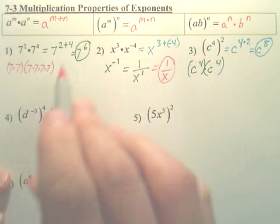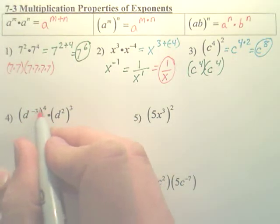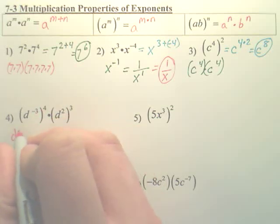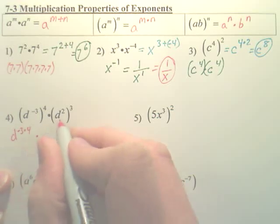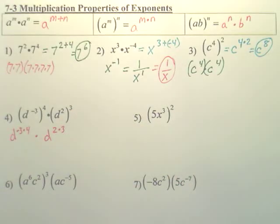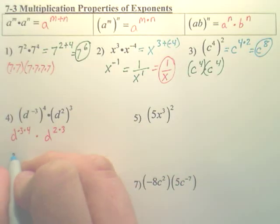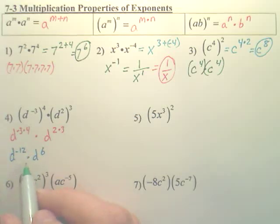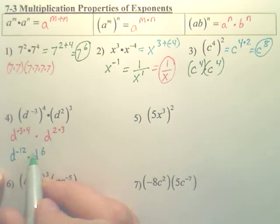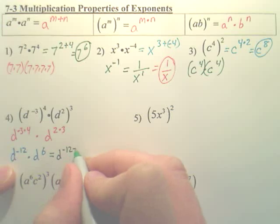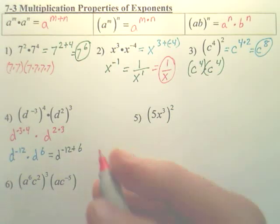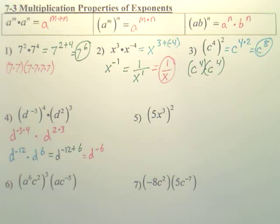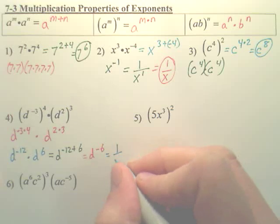Number four uses the same power-to-a-power property. First, multiply the exponents: d to the negative three times four gives d to the negative twelve, and d to the two times three gives d to the sixth. Now we have d to the negative twelve times d to the sixth. That looks like the first property, so add the powers: negative twelve plus six is negative six, giving d to the negative six. And d to the negative six is one over d to the sixth.